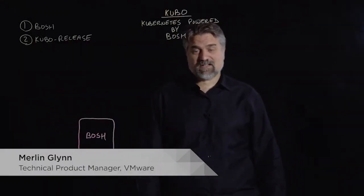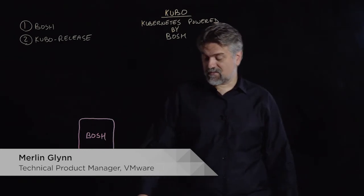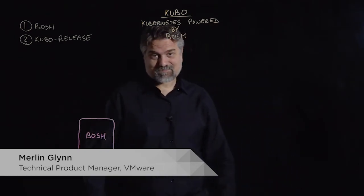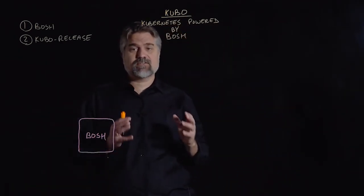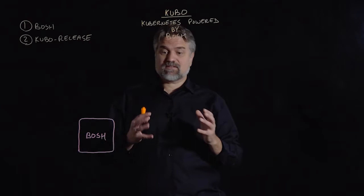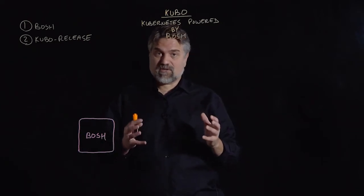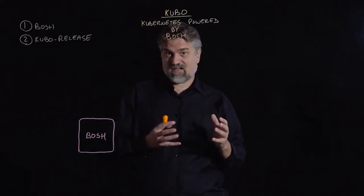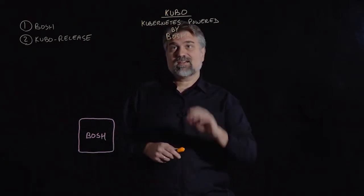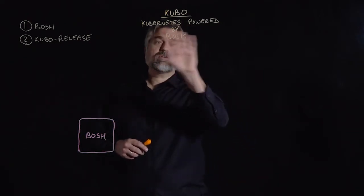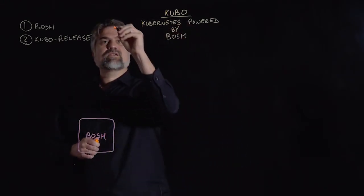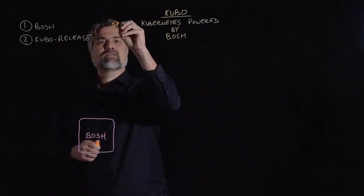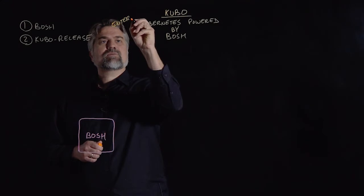Hi, I'm Merlin Glenn. I'm a technical product manager at VMware. In this Lightboard session, we're going to be talking about Kubo, which is an acronym standing for two key components: Kubernetes and BOSH. We're going to be talking about Kubernetes powered by BOSH, and we're really going to put an emphasis on that being enterprise-grade.